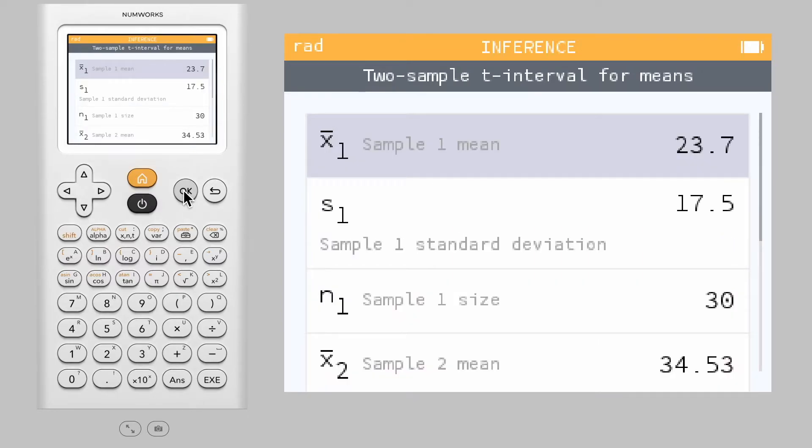We now enter the relevant values from the samples. For the two-sample t-interval, we enter the sample mean, sample standard deviation, and sample size for each sample.